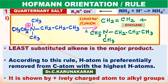Quaternary ammonium salt is synthesized by reacting ammonia with excess alkyl halide. On heating this quaternary ammonium salt with sodium ethoxide, dissolved in ethanol, it gives the least substituted alkene as the major product.